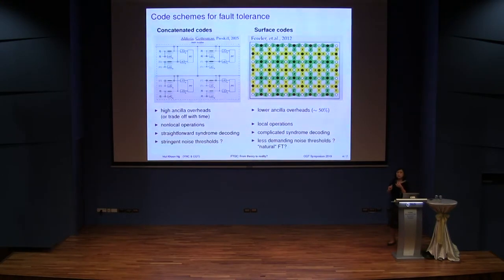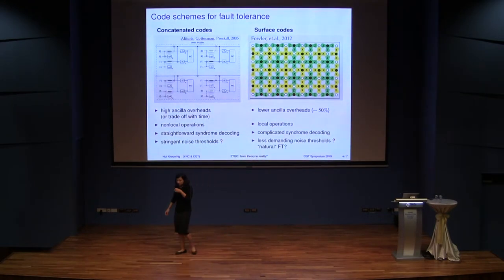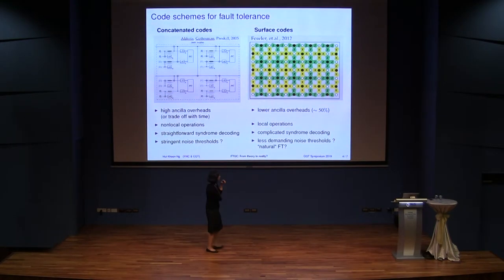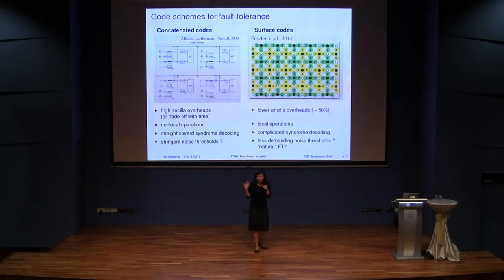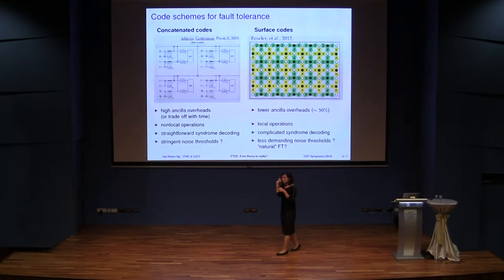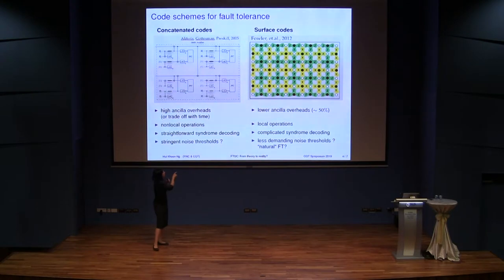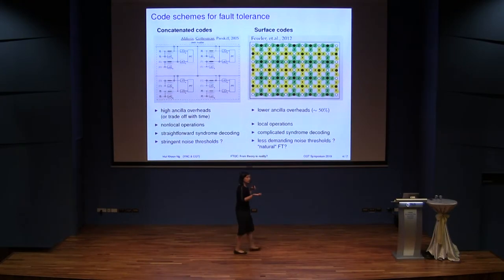One of the main reasons why most architectures people are pursuing for building quantum computers use surface codes — the local operations certainly help — but I think a lot of why people were convinced to prefer surface codes over concatenated codes has to do with the threshold. If you look at the noise threshold numbers between the two, you get the sense that surface codes have much less demanding noise thresholds, meaning you don't need to get your noise as much under control under the surface code scenario than for concatenated codes.